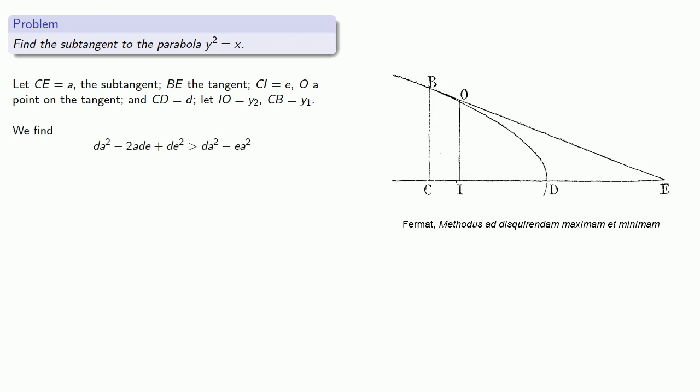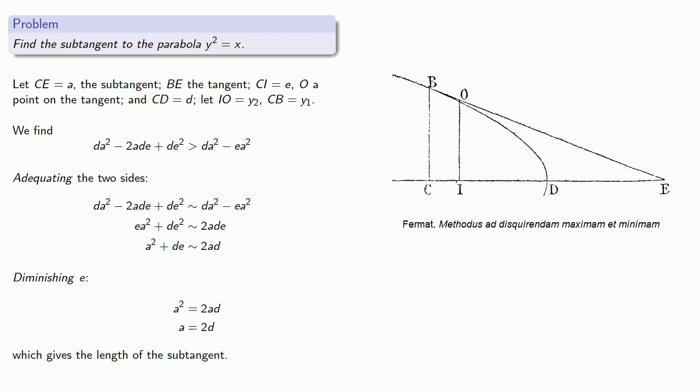And we have an inequality, but if we adequate the two sides, simplify, then divide by e, then diminish e, which we can simplify to a equals 2d, which gives us the length of the sub tangent.